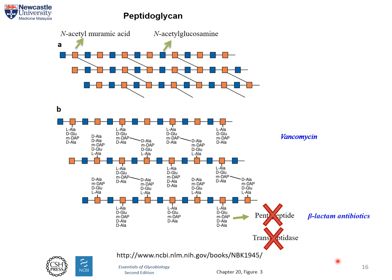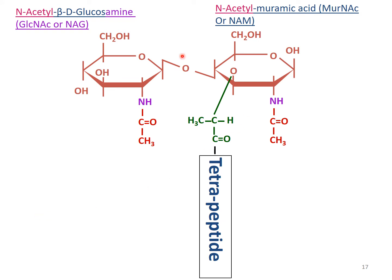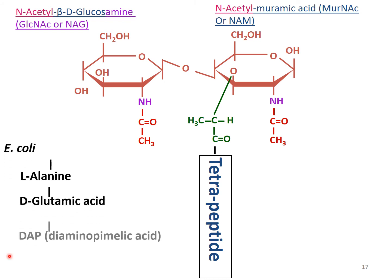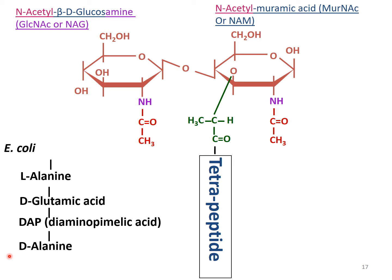The basic unit of peptidoglycan is muramic acid and glucosamine. The peptide group is linked specifically to the muramic acid and it is a pentapeptide when not involved in cross-linking, but when used in a cross-linking event it loses one amino acid and becomes a tetrapeptide. In E. coli this is a specific peptide sequence, and for different types of bacteria this sequence could be slightly different, which is why a range of antibiotics is needed.